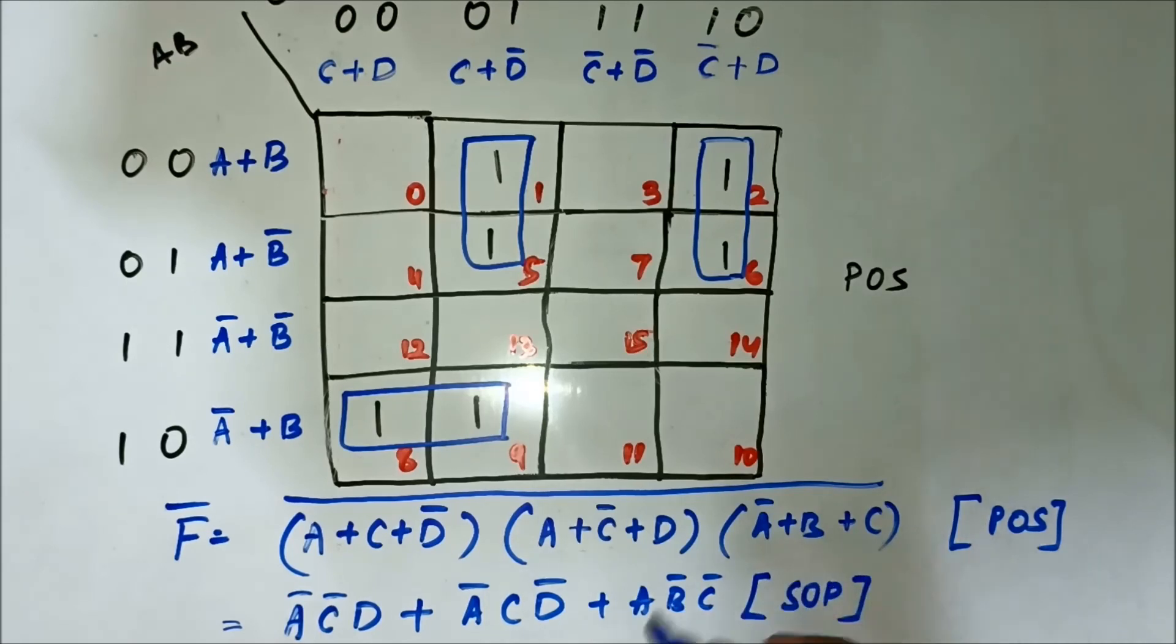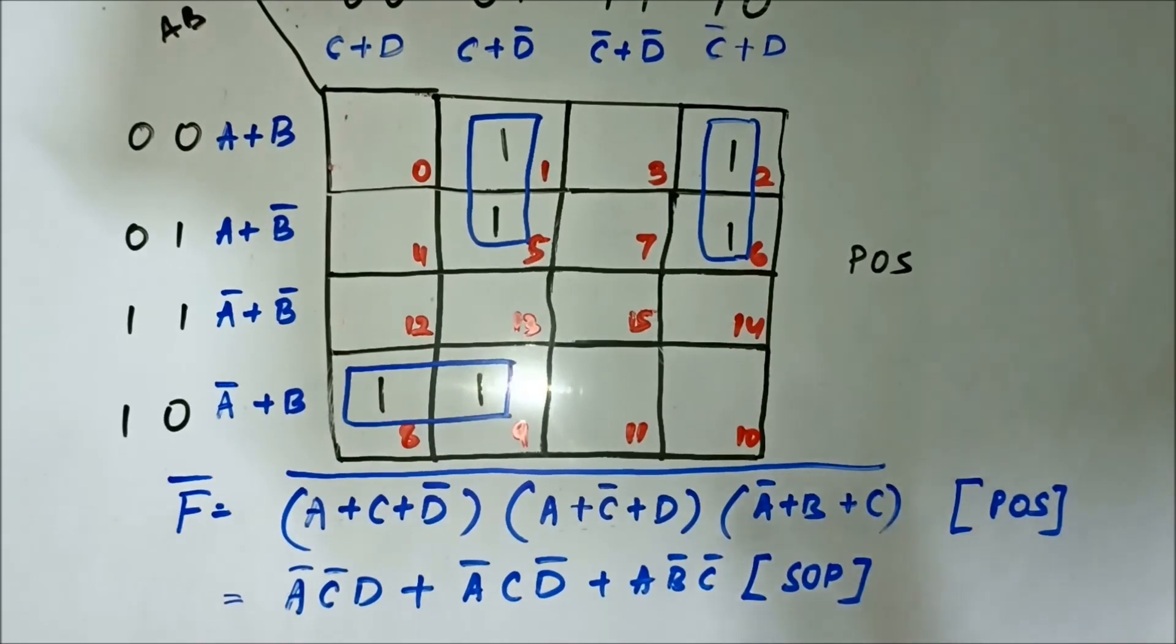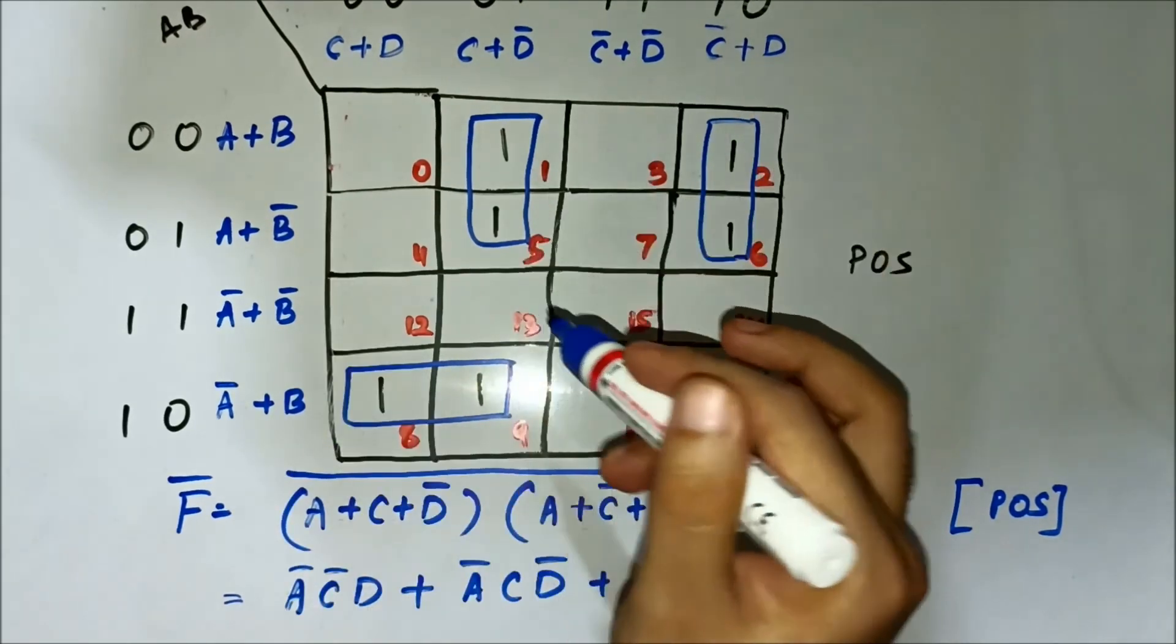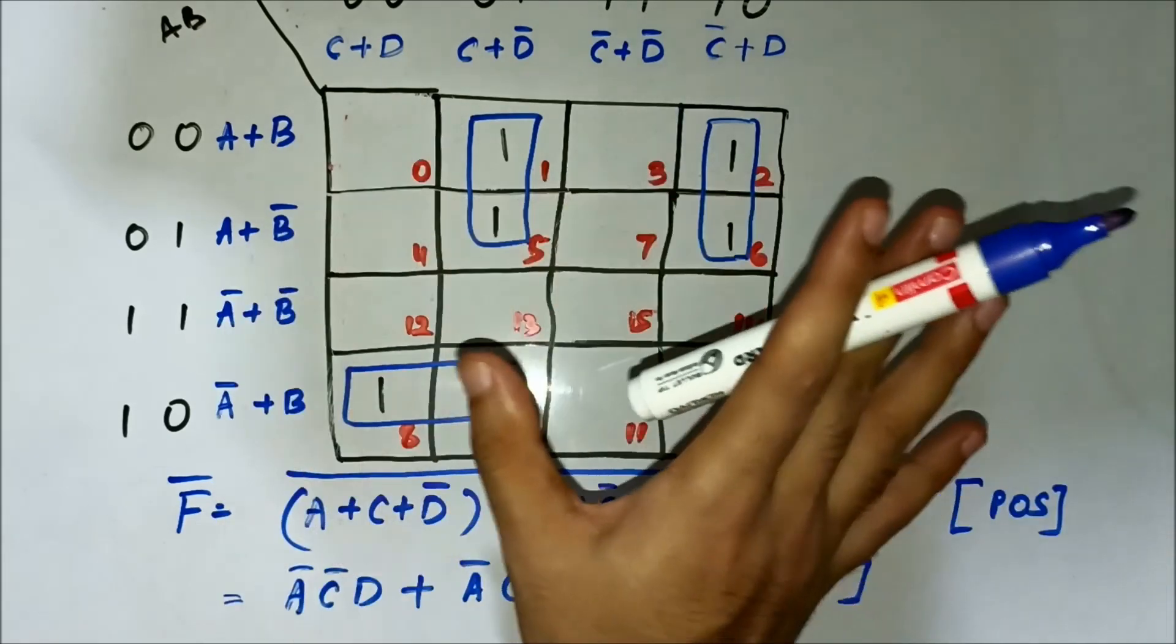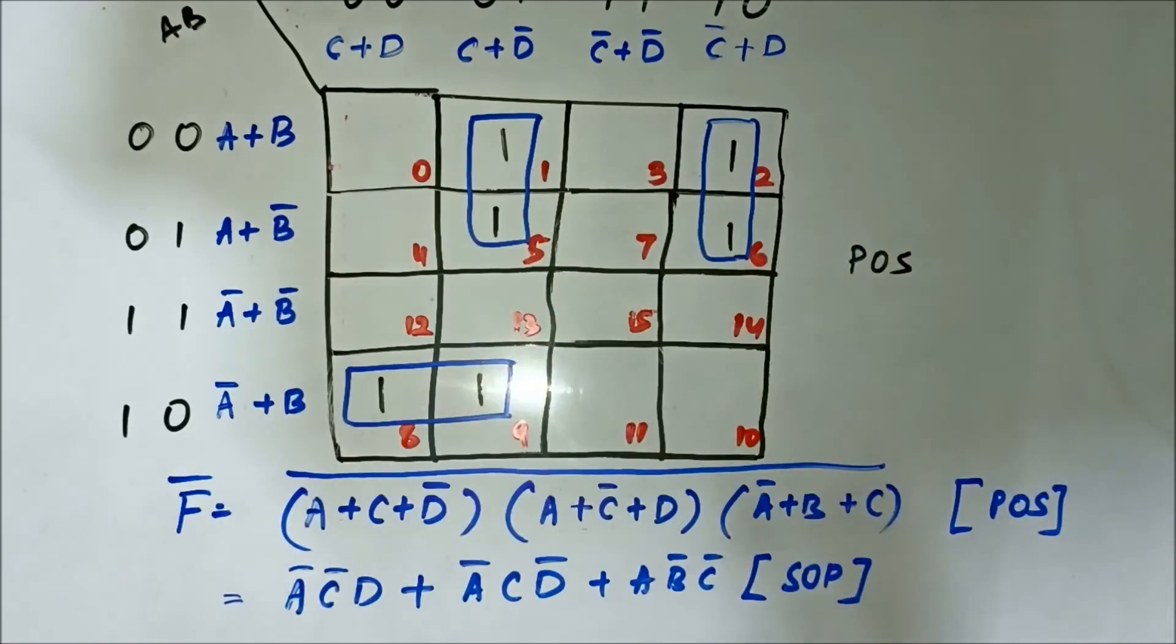Here, we have discussed the implementation of SOP expressions using POS K-map for four variable Boolean expressions.